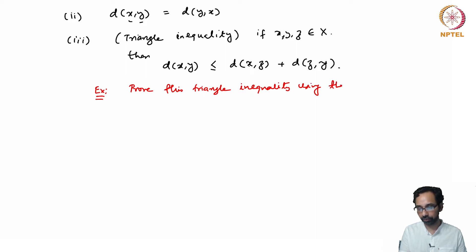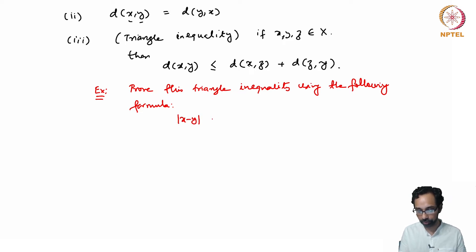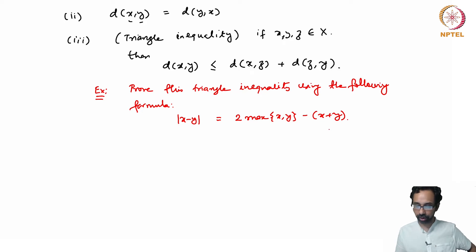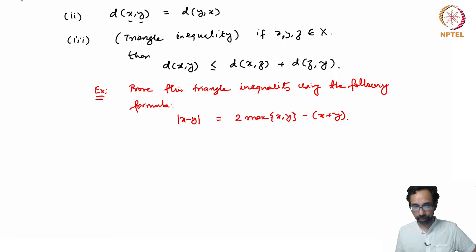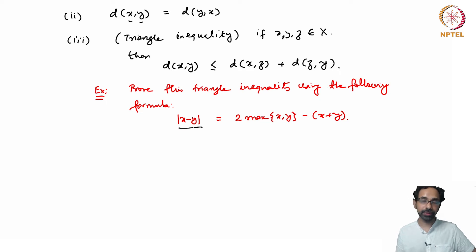You can prove the triangle inequality using the following formula: |x - y| = 2·max(x, y) - (x + y). This is one way to show the triangle inequality and it is not very difficult. These three things are the fundamental properties of the distance function given by the absolute value of the difference between two points on the real line, and we shall use these three properties to define an abstract distance function — in other words, a metric.